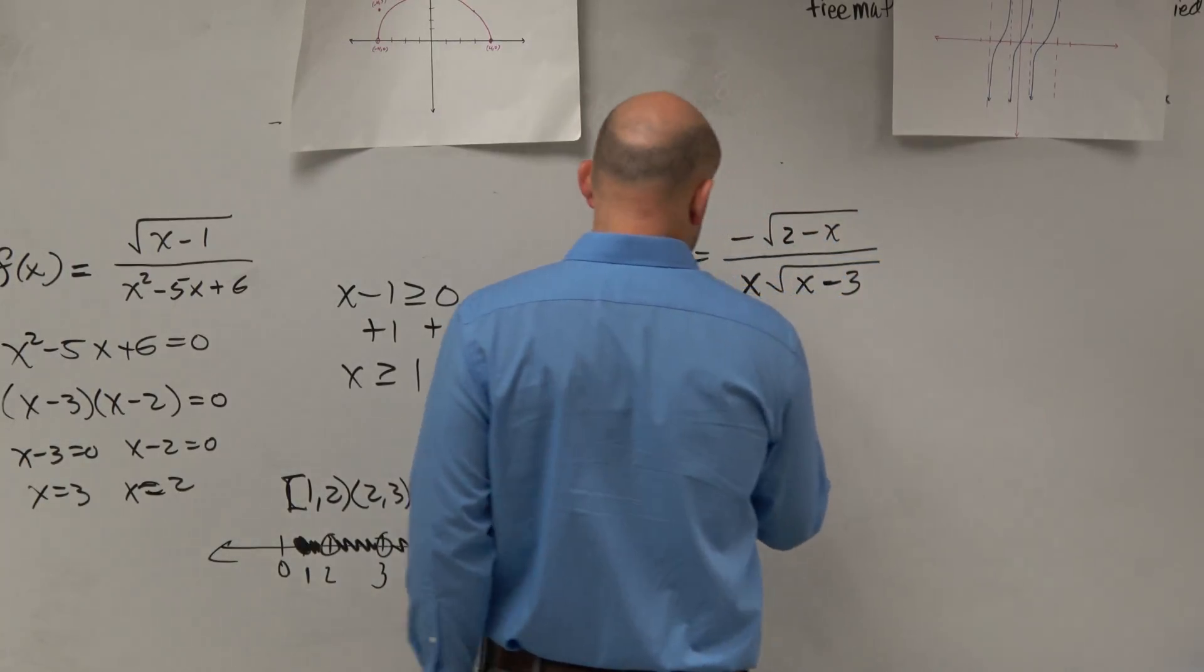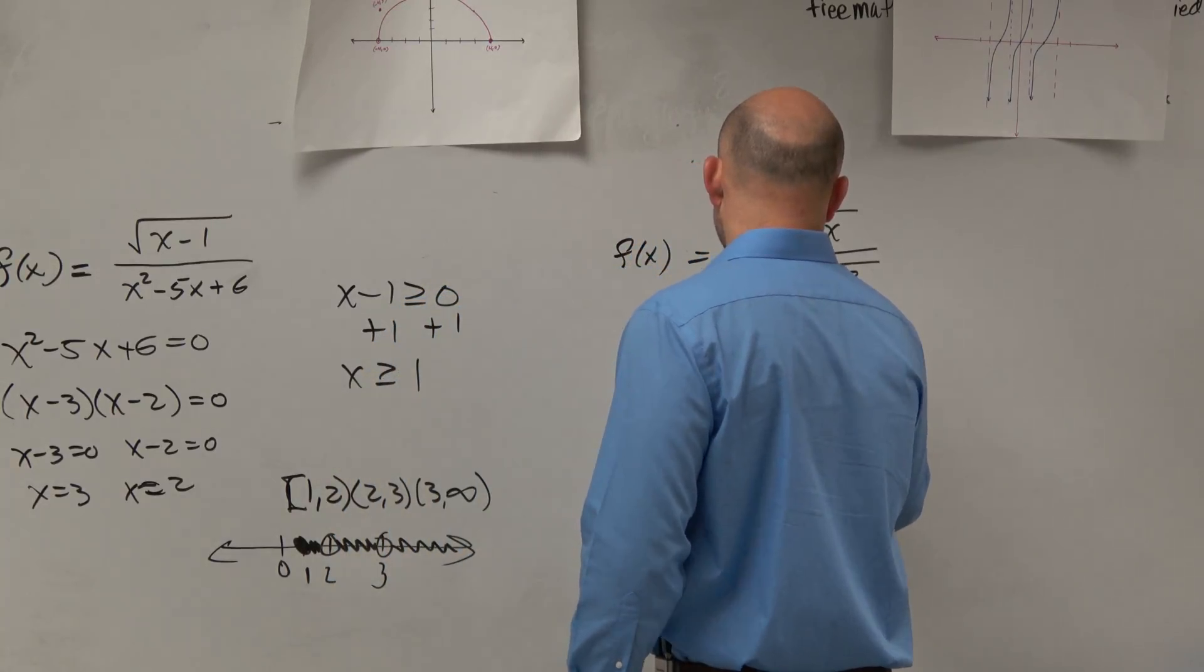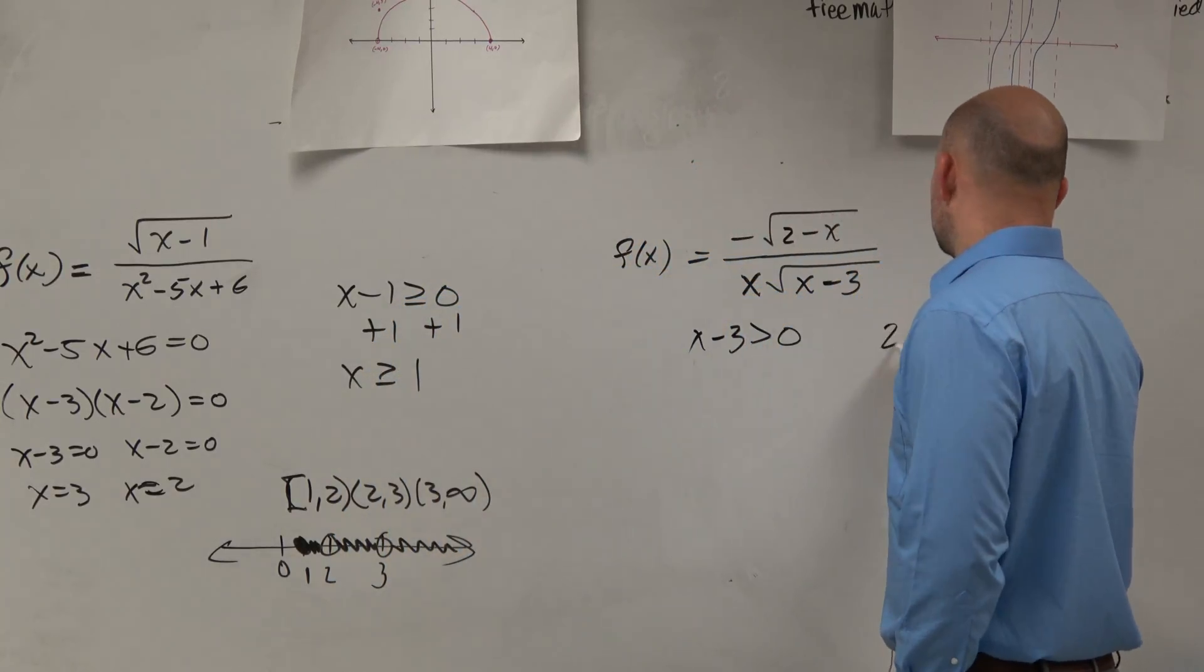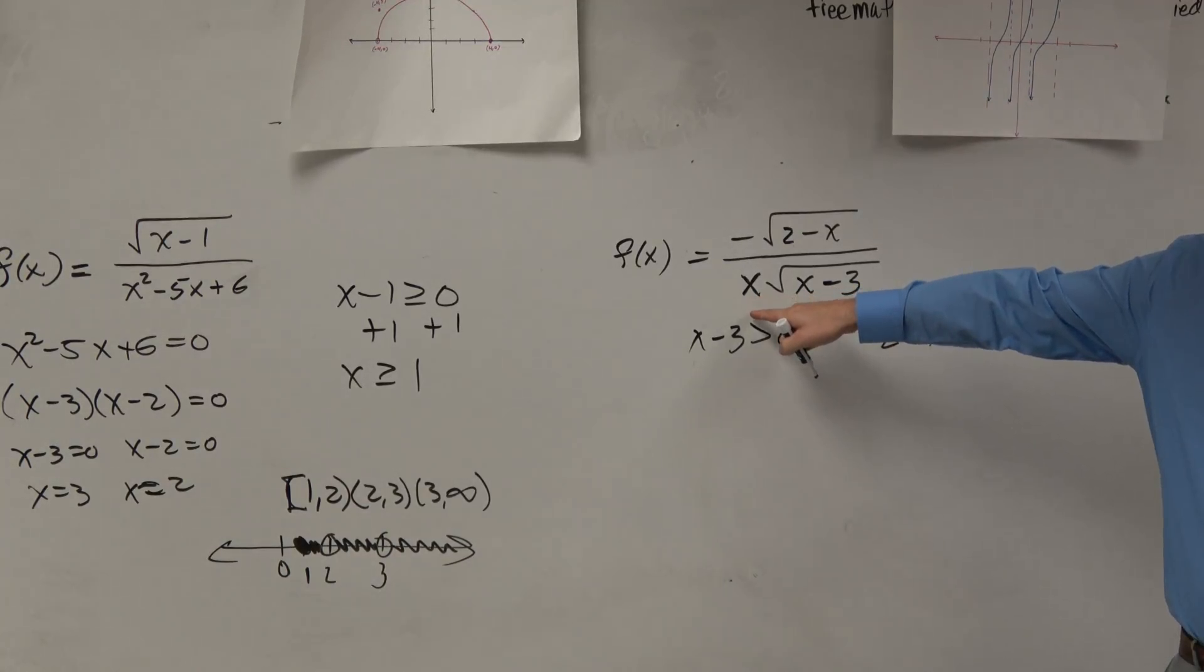So that's what I'm going to do. I'm going to have x minus 3 is greater than zero. 2 minus x is greater than or equal to zero. And then also, what happens if x is zero here? Does that make the denominator equal to zero?